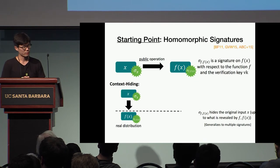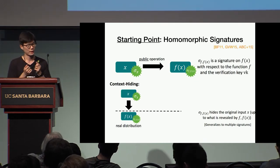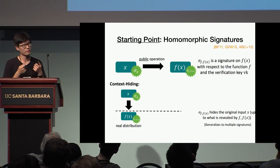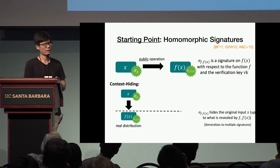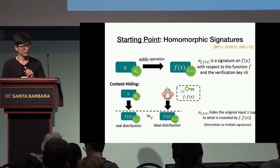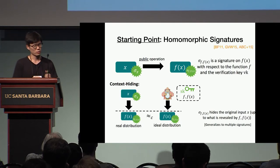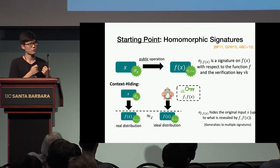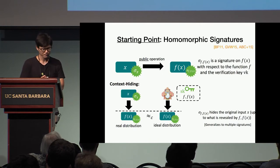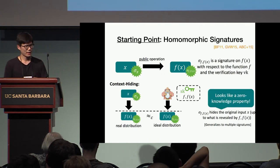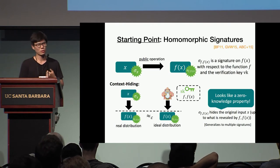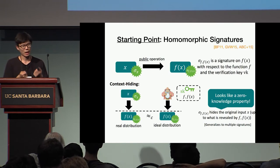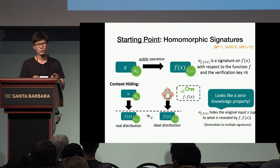The second property is context hiding. Context hiding security says that the homomorphically evaluated signature does not contain any information about the originally signed message X, other than what can already be revealed from the output F(X). We capture this formally using a simulation-based definition. In the real distribution, the challenger evaluates F on the signatures to derive a homomorphically evaluated signature. In the ideal distribution, a simulator simulates this signature given only the output F(X), but not the original message X or the original signature.